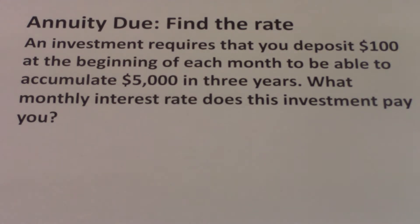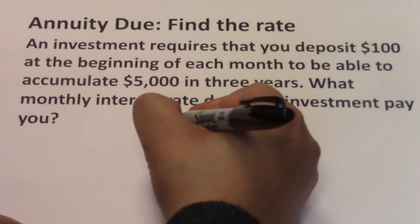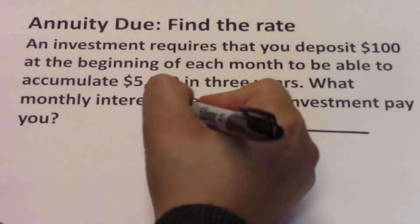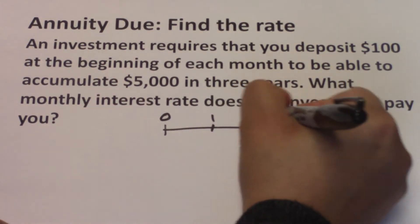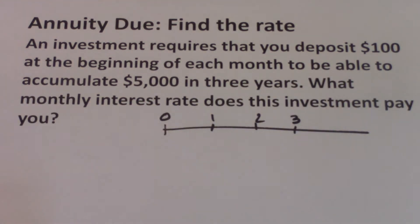Let's draw the timeline to visualize the cash flows that are happening. Each month we are depositing $100, and this is a cash outflow to us, so it will be a negative number.